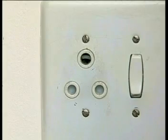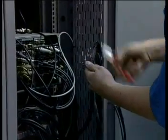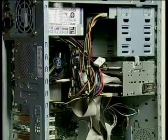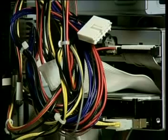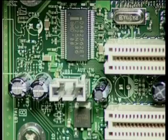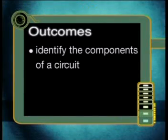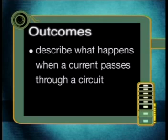Whenever you flick a switch to put on a light, whether the light is a torch or uses mains electricity, the light is part of an electric circuit. Simple electric circuits are all around us, from ordinary household wiring to complex circuits in computers. Every day, electrical energy is continuously transferred by electric currents through a complex network of electrical circuits. Some circuits can be large and supply a whole community with electrical energy. By the end of this lesson you should be able to identify the components of a circuit and describe what happens when a current passes through an electrical circuit.